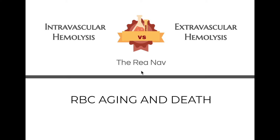Today is just a continuation of the hemoglobin series. The first one was structure and synthesis, the second one was the dissociation curve. Today we are going to talk about how hemoglobin gets recycled and what happens to an aging RBC — intravascular hemolysis and extravascular hemolysis. It's about RBC aging and death.